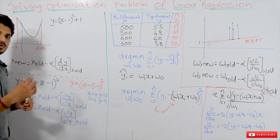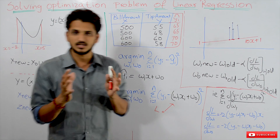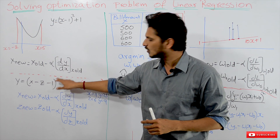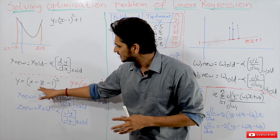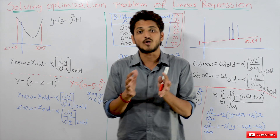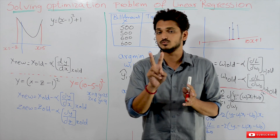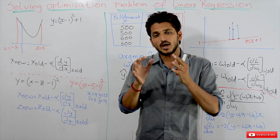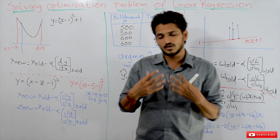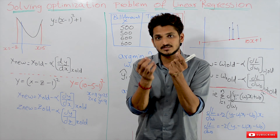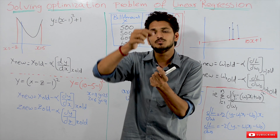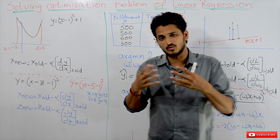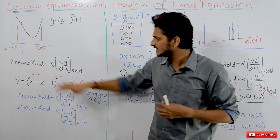Let's take one more example to understand how gradient descent works. Consider y is equal to (x minus z minus 1) whole square. Here y depends on two variables: x and z. So what's our goal of gradient descent here? At what value of x and z is y minimum? This is what we have to identify using gradient descent.